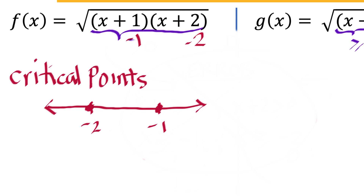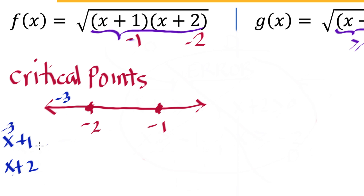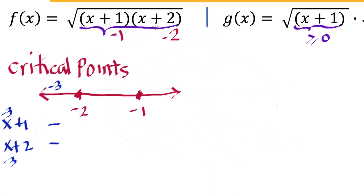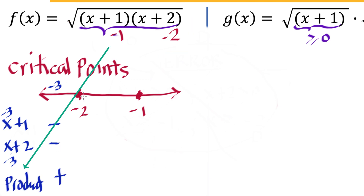Let's take a value less than -2, say x = -3. Then (x+1) = -3+1 = -2, which is negative, and (x+2) = -3+2, which is also negative. The product is negative times negative, which is positive. So from negative infinity to -2, the sign of the product is positive.